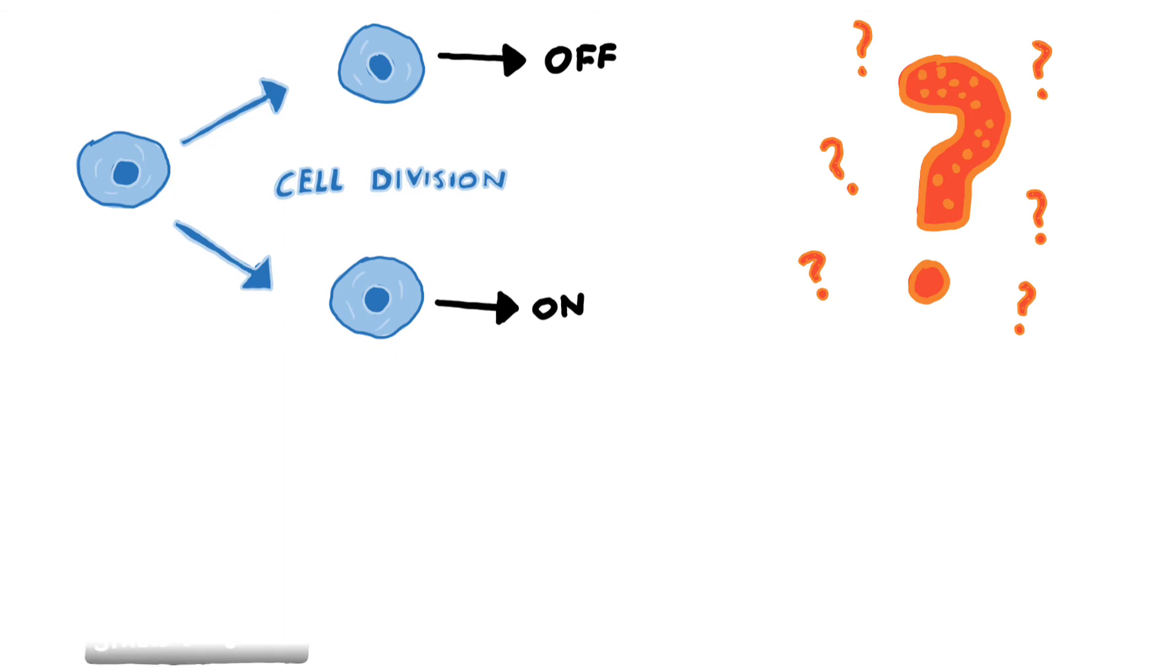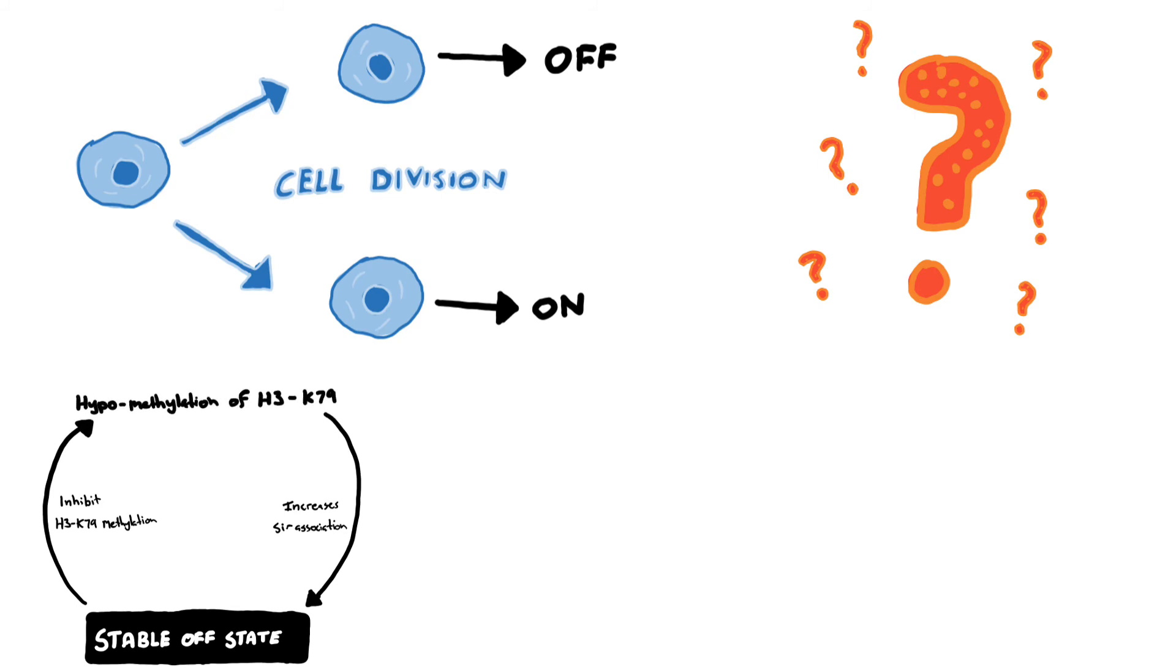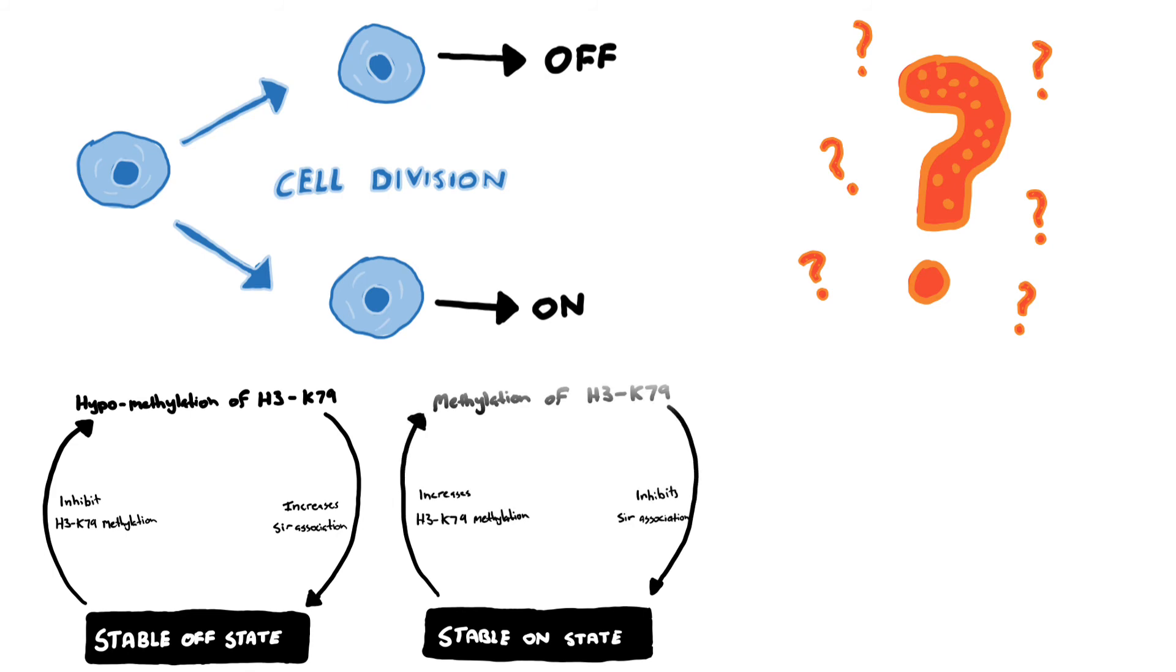The off state involves CERB proteins binding under-methylated H3K79, inhibiting DOT1 binding and subsequently increasing hypomethylation, and the on state mediates H3K79 methylation, weakens CERB protein binding, and increases H3K79 methylation.